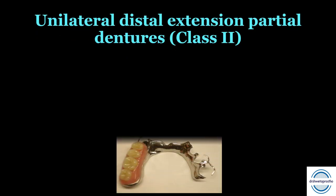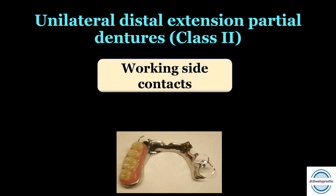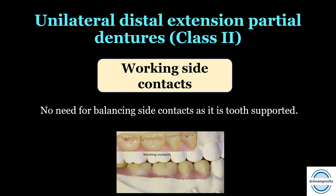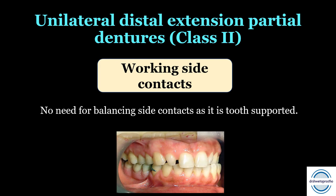The next condition is a unilateral distal extension partial denture — Kennedy's Class 2 case — whether maxillary or mandibular. In this we give only working side contacts, because the opposite side is tooth-supported. We need not give balancing side contacts, since the stability of the denture is not enhanced by them — it is entirely tooth-supported on the balancing side by the framework.